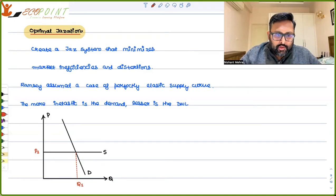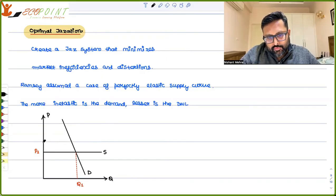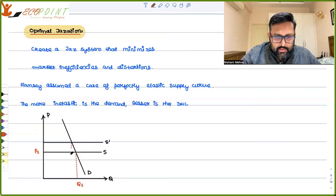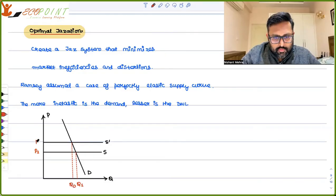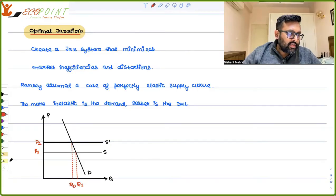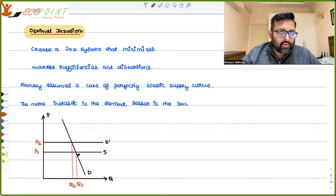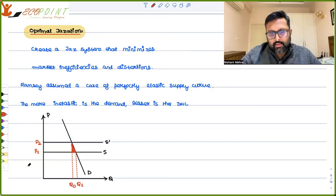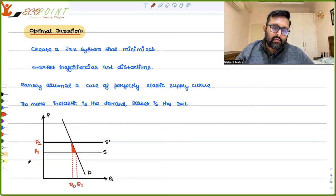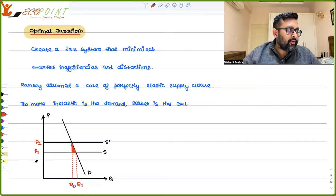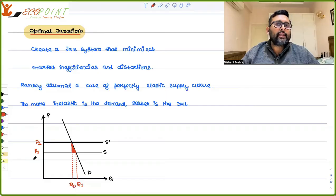Now let's say a tax is being imposed. The moment tax is imposed, your supply curve will shift upwards. Quantity demanded is going to fall and the price is going to rise, so the entire burden is on the consumers. This triangle is what the deadweight loss is, and this deadweight loss is smaller because you have quite inelastic demand. So the more inelastic is the demand, the lesser is the deadweight loss.